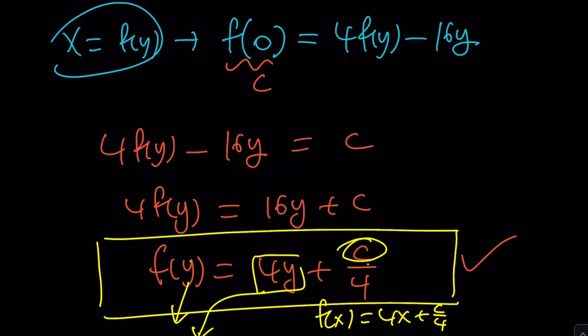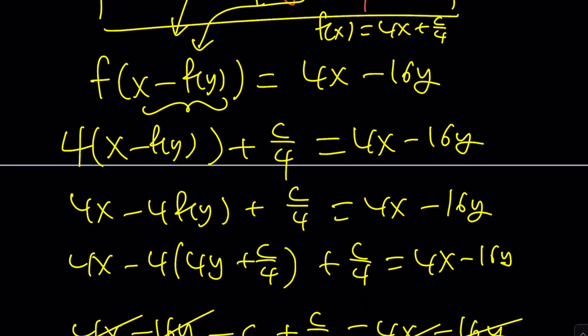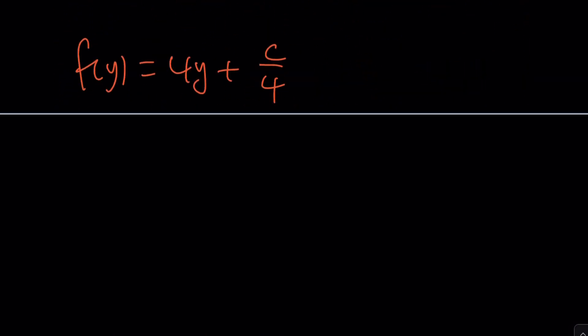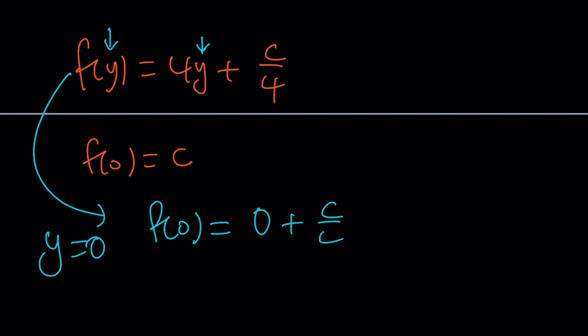So, you can replace y with 0 on both sides here, right? Y with 0. And, that's going to give you f(0). Let's do it. Y = 0 is what we're going to do. f(0) = 4 × 0 + c/4. But, f(0) is c at the same time. So, this means c/4 = c, which means c = 0. Can a number equal its fourth? Yes, only if it's 0.